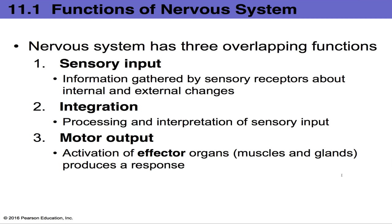The nervous system has three overlapping functions: sensory input, integration, and motor output. Throughout our body we have millions of sensory receptors detecting changes both internally and externally. When these receptors receive input, the data is sent to the integration center of the body, where information is processed, interpreted, and a response is decided upon.